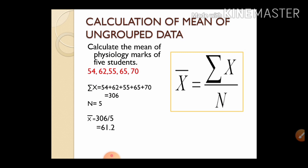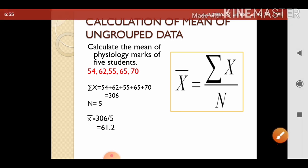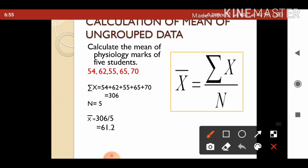The formula for calculation of ungrouped data is x-bar = sigma x / n. See an example: calculate the mean of physiology marks of five students. The marks are given, so sigma x is 54 + 62 + 55 + 70, which comes to 306. N is the total number of samples, here there are five.